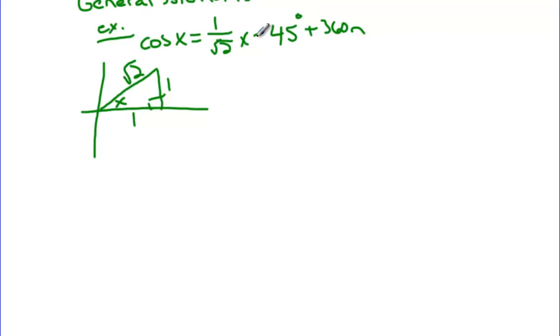For cosine, the other solution is just the negative of that one. So for cosine, you find the principal inverse value, you add 360n, and then your other equation is x equals the negative of what you found.